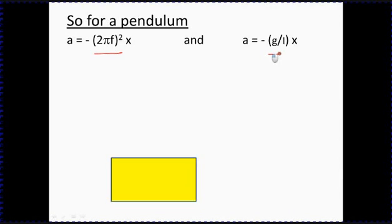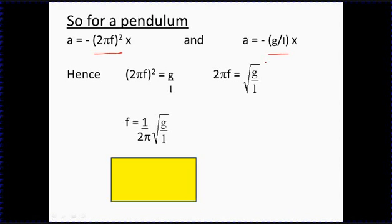Here's our general equation for simple harmonic motion: a equals minus 2π f squared times x. Here's the one we just derived: a equals minus g over L times x. Hopefully you can see that the minus 2π f squared and the g over L is the same thing. The next step we can do is 2π f squared equals g over L. Take the square root of both sides: 2π f equals the square root of g over L. To get frequency we'll then just divide by 2π.